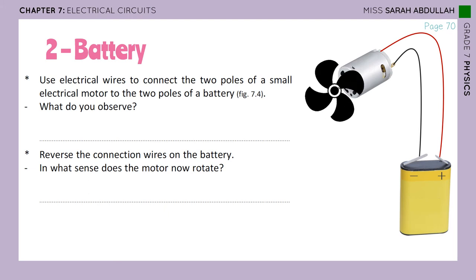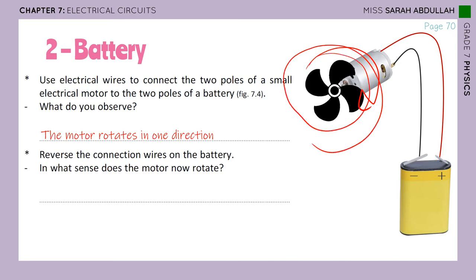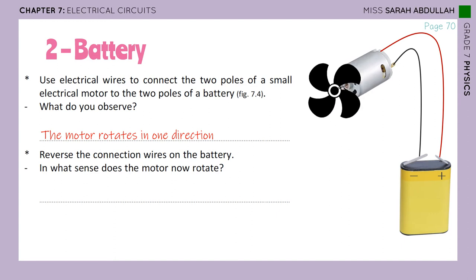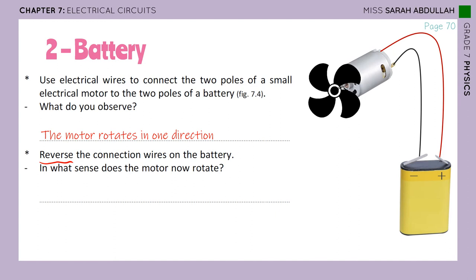We connect them and the motor starts rotating. What do you observe? The motor is rotating in one direction. Why did the motor start to rotate? Because when we connected it to the battery, the battery sends electrical current through the circuit, so electricity is running through the circuit and this is why the motor turned on and is rotating in that direction. Now reverse the connection wires on the battery.